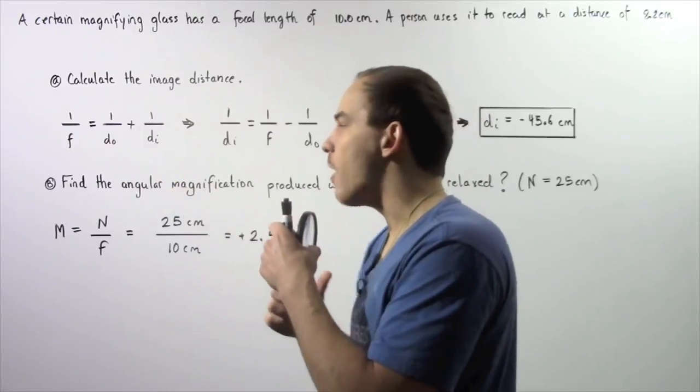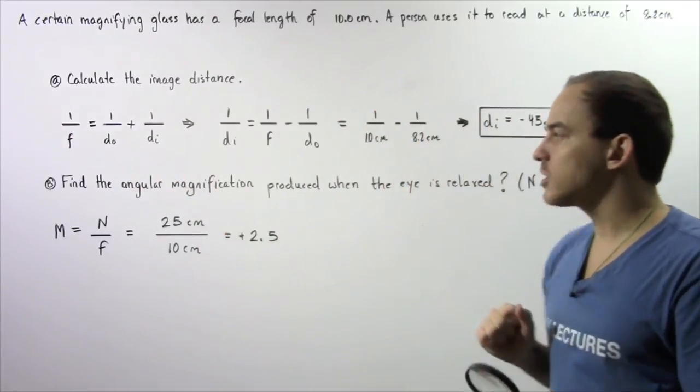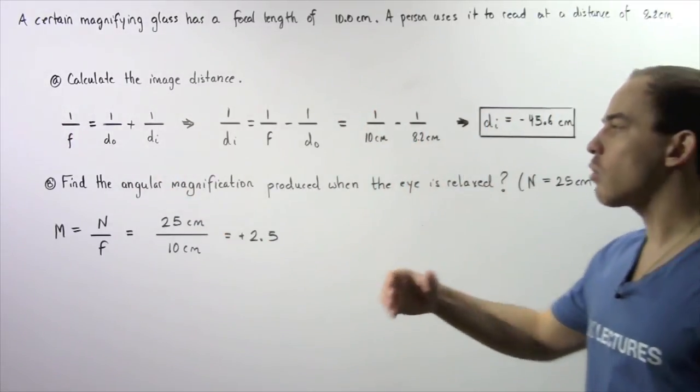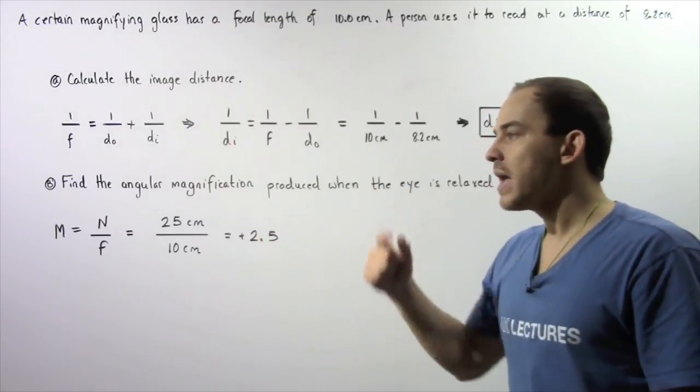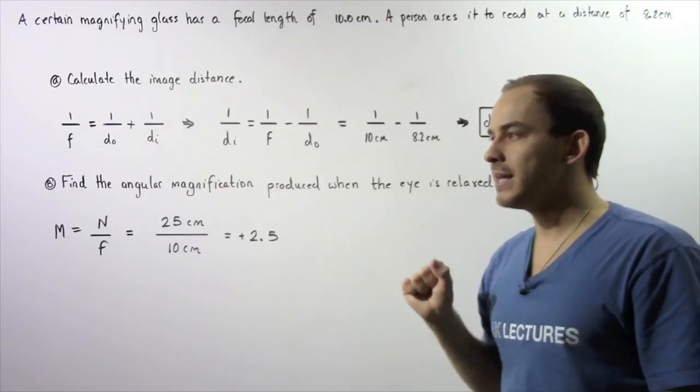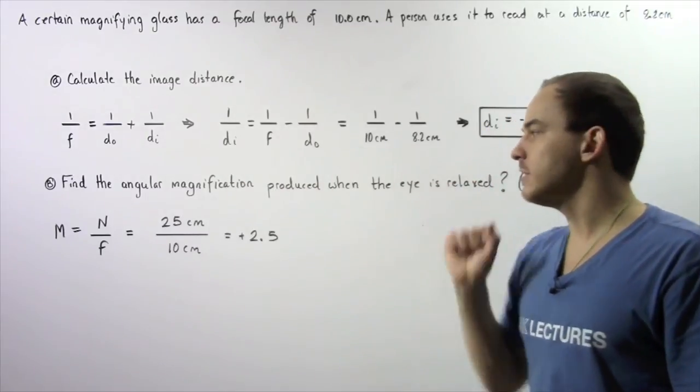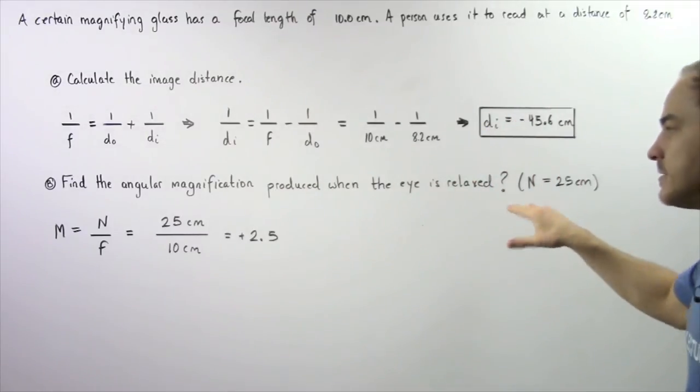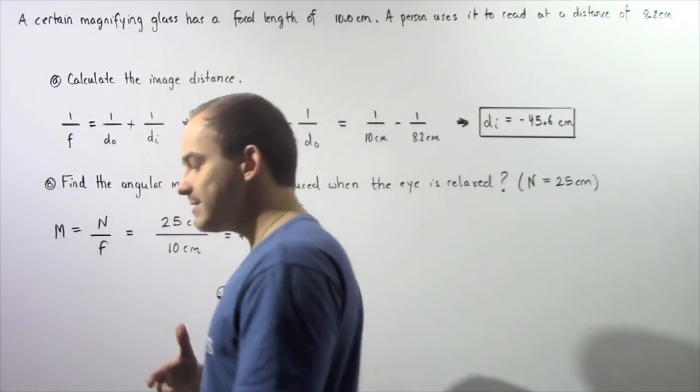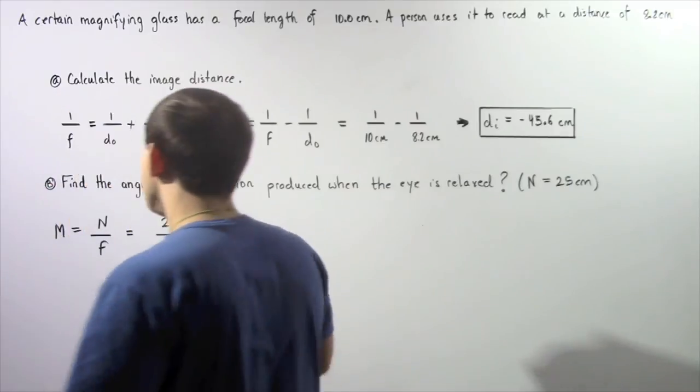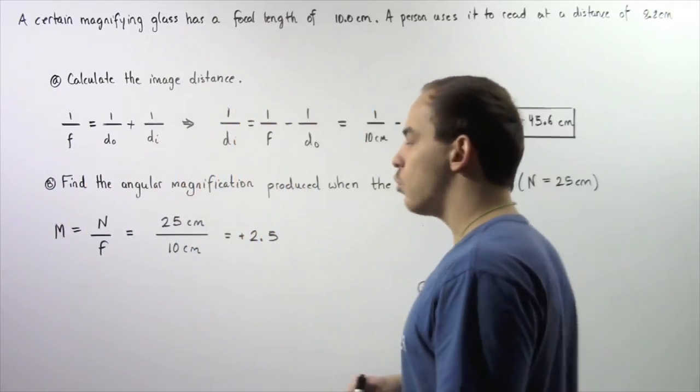The ciliary muscles of the eye are only relaxed when that virtual image produced by this magnifying glass is found infinitely far away. So in part B, we're assuming that our image formed by our glass is found infinitely far away and so our eye is looking at the image that is found infinitely far away. If this is the case, if we're assuming that the image is at a distance that is infinitely far, we use the following equation.